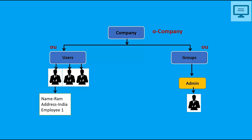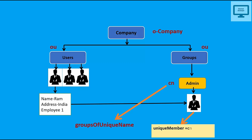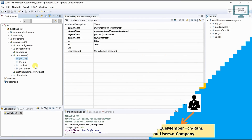Imagine you have an organization O equal to company. Inside it we have two OUs — Users and Group — and inside Users we have added all the user attributes. One user can belong to different groups. When creating a group, we use an attribute called groupOfUniqueNames. To link a user like Ram (who is inside Users) to the admin group, we use the uniqueMember attribute, and just follow the path of Ram — CN=Ram, OU=Users, O=company.